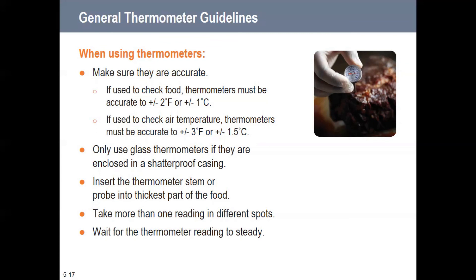Wait for the thermometer reading to steady out — for a stem thermometer, wait for the dial to stop moving; for a digital, wait for the number to stabilize. Chapter five gives an overview of the flow of food: thermometer use and calibration, awareness of cross-contamination, and time-temperature abuse. We'll get into more detail in the following chapters covering food from the time it comes in our door to when it goes out to the customer.